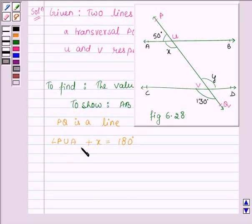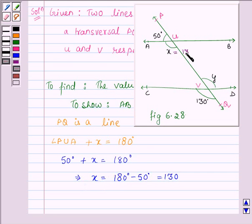Now angle PUA is 50 degrees, so we have 50 degrees plus x is equal to 180 degrees. This implies that x is equal to 180 degrees minus 50 degrees, which is equal to 130 degrees. So x is equal to 130 degrees.